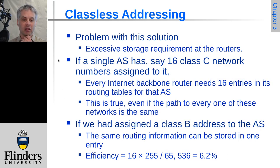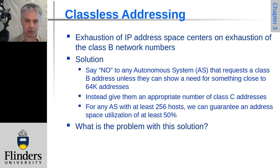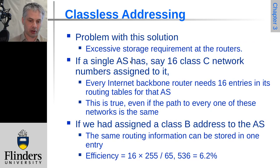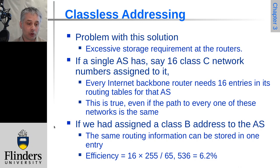However, this wasn't without problems, because routers now needed potentially many more entries. Instead of just having entries for 16-bit class B networks, we now needed entries for all the class C blocks assigned to each autonomous system — each separate large network or organization. This created a dilemma: do you optimize the size of the routing table, or do you optimize the allocation of IP addresses? Both were under pressure.